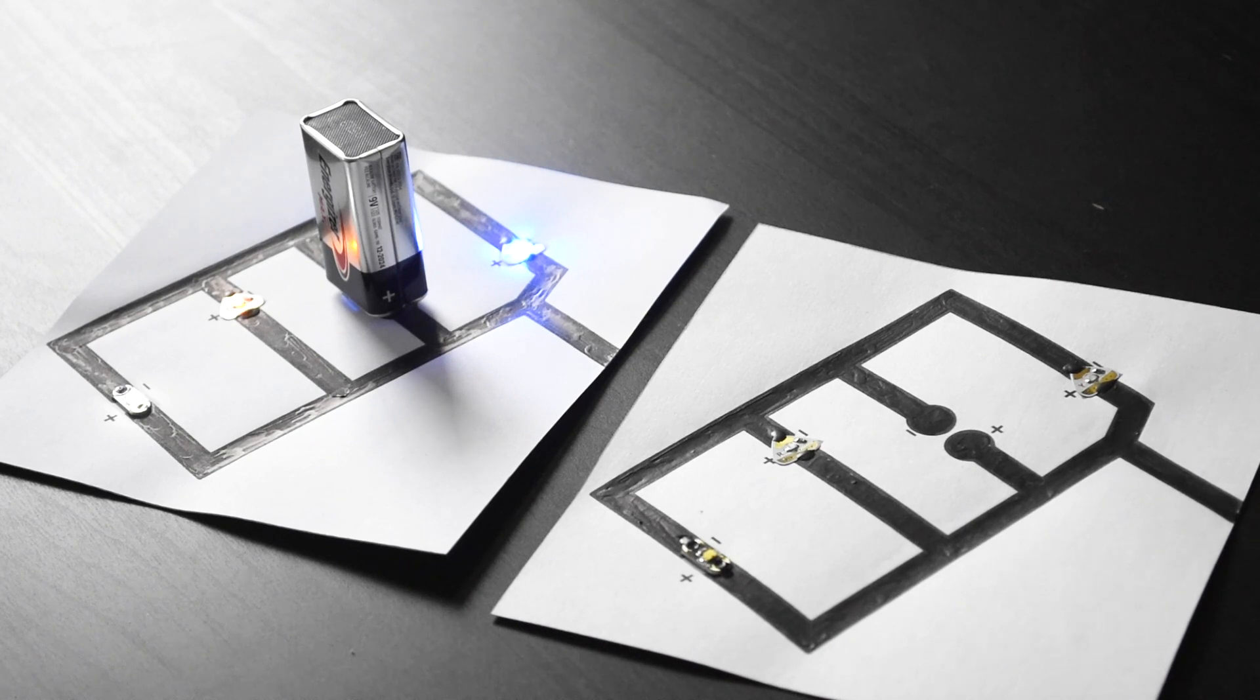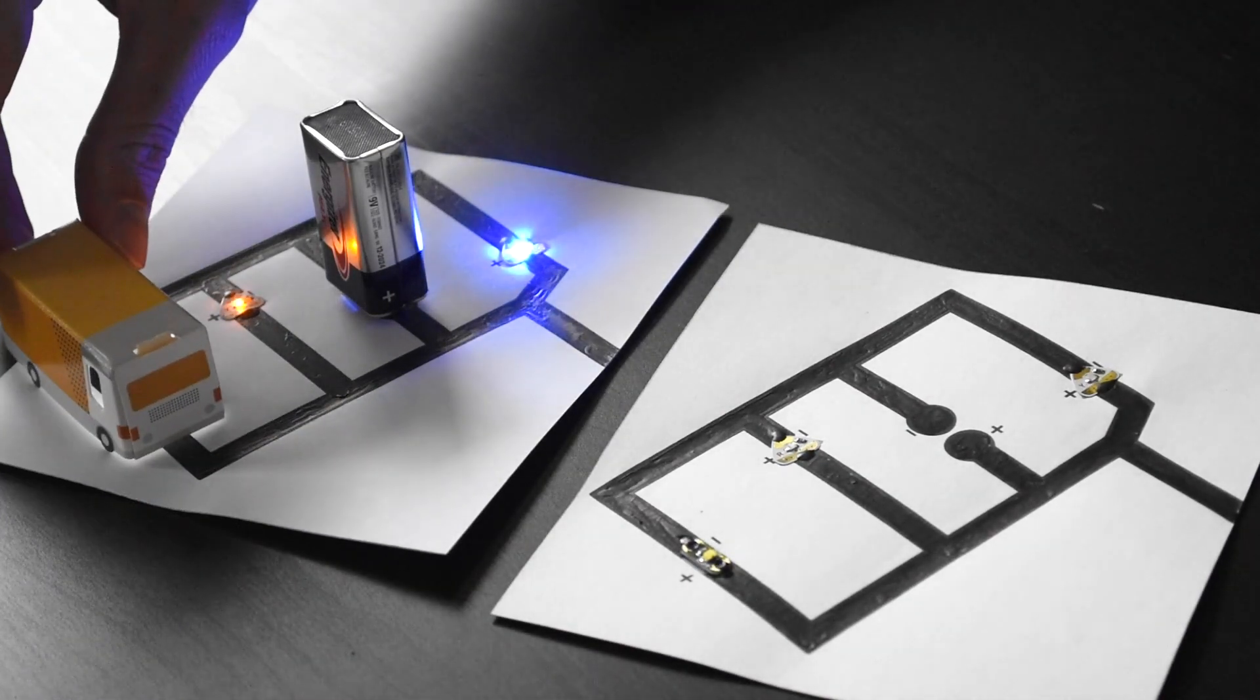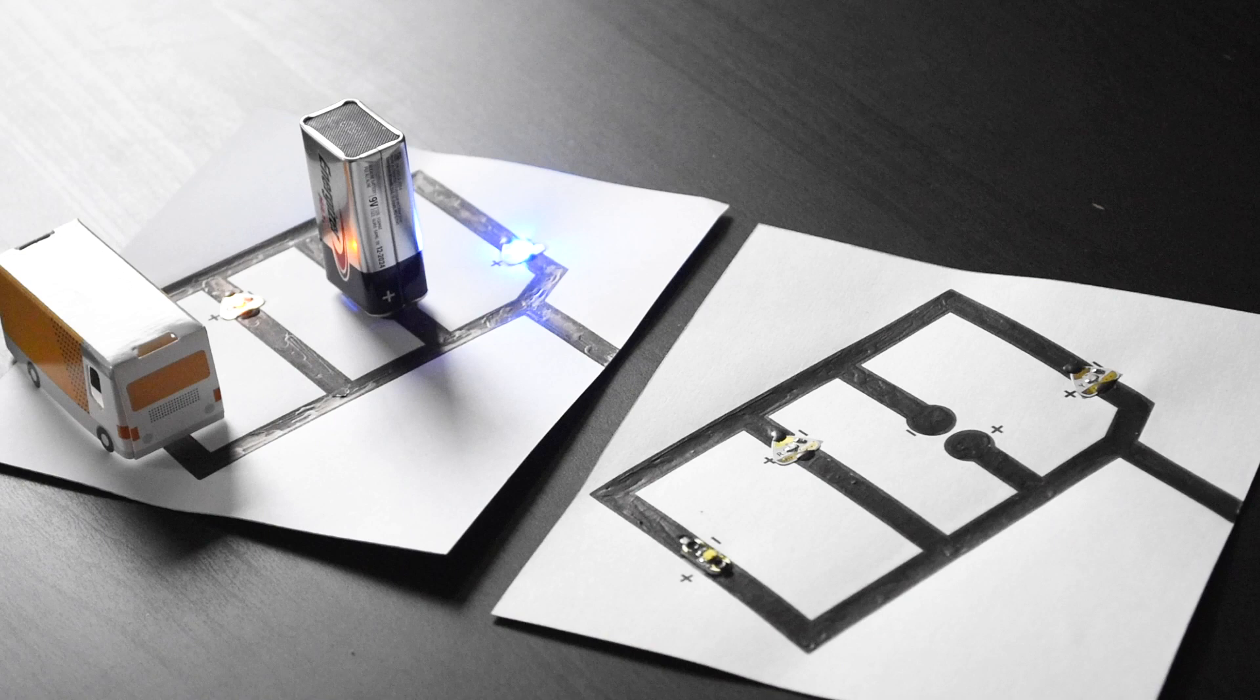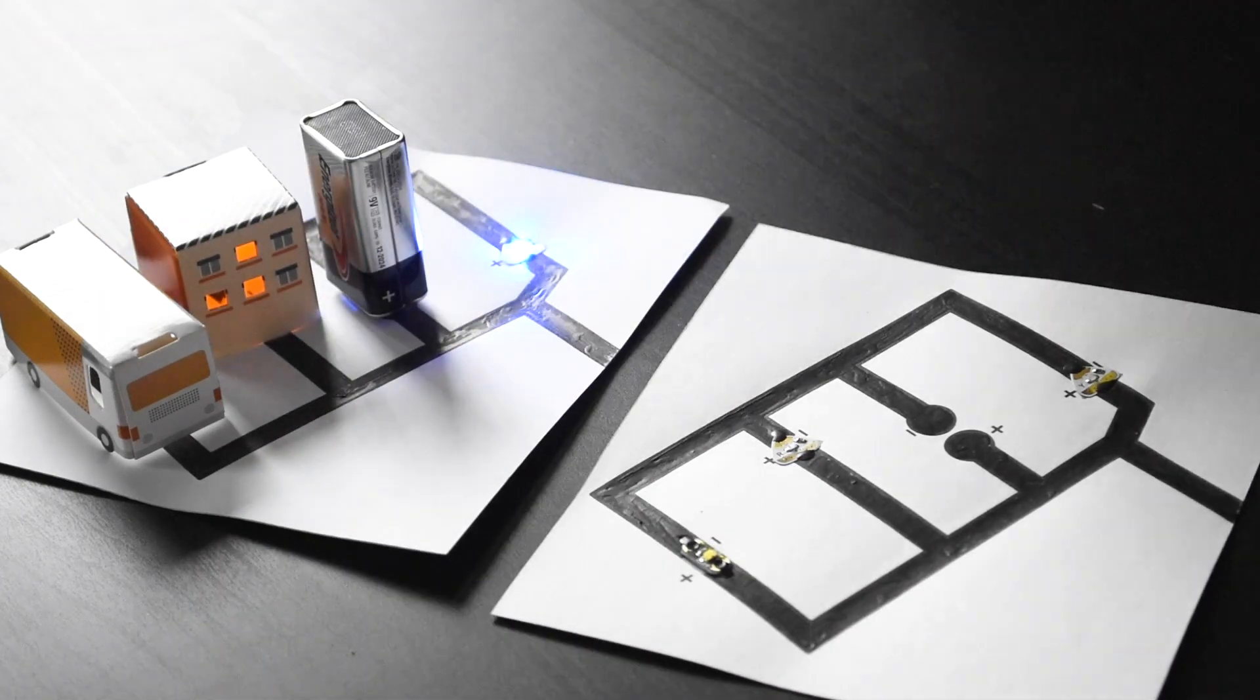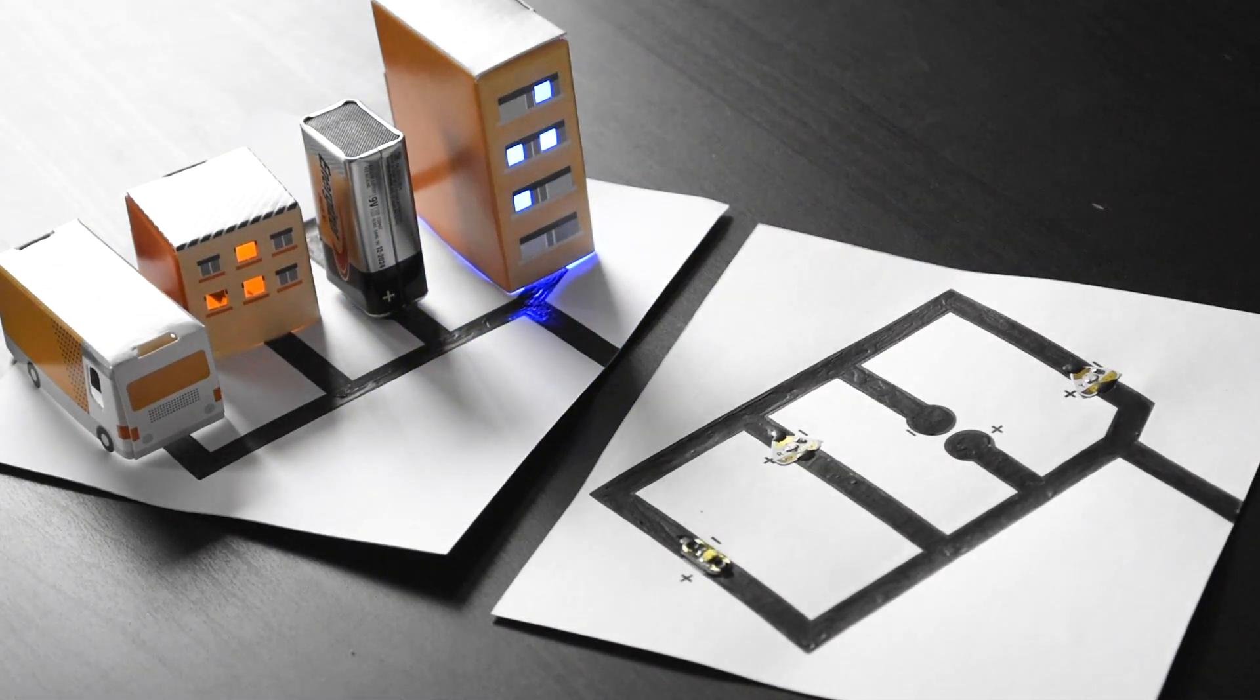What you can then do is take the houses from the circuit kit that we did last time and just add them to your circuit as well. A little house here and this house here, a blue house, and also adding this house covering the battery.